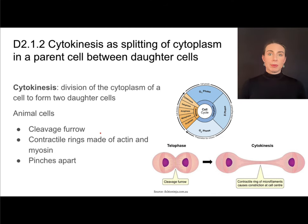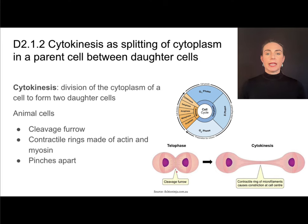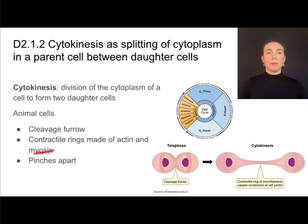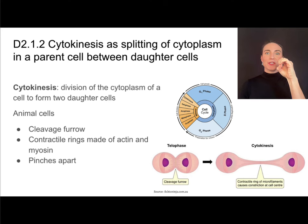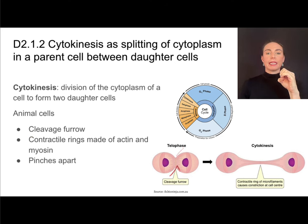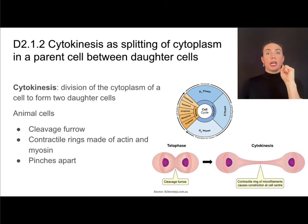In animal cells and plant cells, cytokinesis looks a little bit different. In animal cells, when they are ready to split their cytoplasm, they are encircled by a ring called a contractile ring. That contractile ring is made up of two proteins called actin and myosin. It starts to contract and get smaller and smaller, forming something called a cleavage furrow. Eventually that ring will get so small that the cells will pinch apart and those new daughter cells can separate.